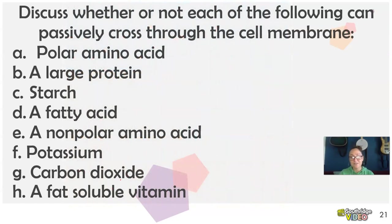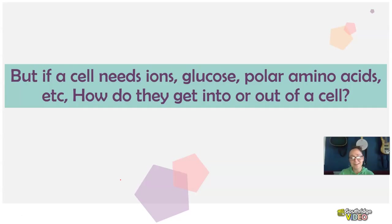So you can pause here and check yourself. Can you explain how each of these can enter a cell? Can they go passively or not? Polar amino acids, cannot. A large protein, no. Starch is large, so that's a no. The fatty acid, yes. Non-polar amino acid, yes. Potassium is charged, no. Carbon dioxide is a yes because it's non-polar. And a fat-soluble vitamin, sure, because the clue here, fat-soluble, meaning that it's lipid-based, non-polar can cross right through that membrane.